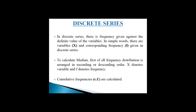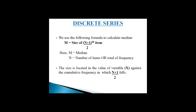Next, calculation of median in discrete series or grouped data. In discrete series, frequency is given against definite values of the variable — that is, both variable x and corresponding frequency f are given. To calculate median, the frequency distribution is arranged in ascending or descending order, and cumulative frequencies (cf) are calculated. We then apply the formula M = size of (N+1)/2 th item, where N is the total frequency. The size is located in the value of x against the cumulative frequency in which (N+1)/2 falls.